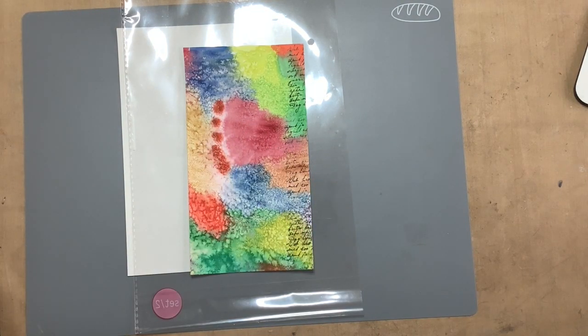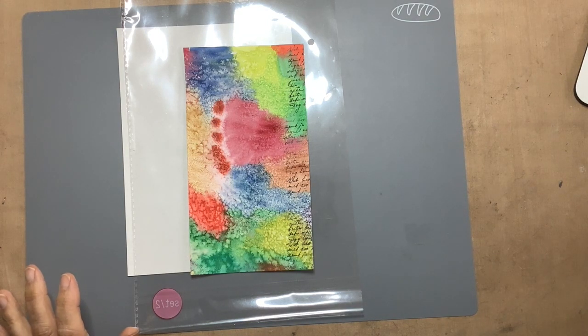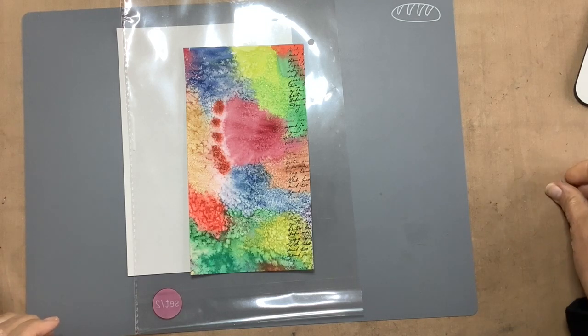Hello everyone, it's Honey with my journal embellishment number 26. The prompt is window and I'm going to make a belly band.